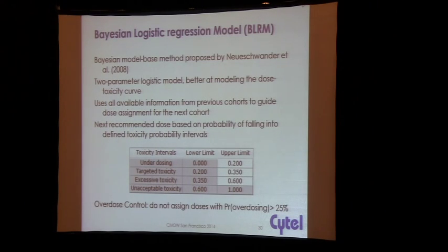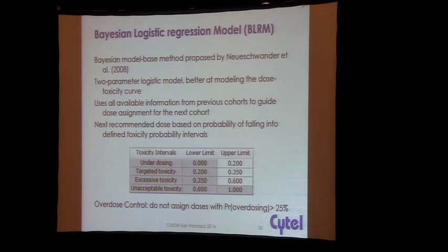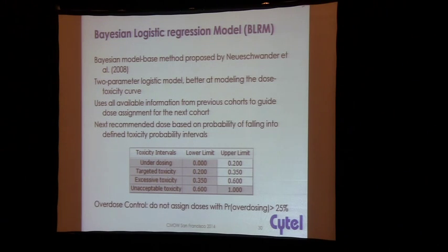The Bayesian logistic regression model is the model Novartis uses — they've run 150+ trials with this design in Phase 1 oncology. The people who published this are Novartis statisticians — Neuenschwander et al. The main difference is this is a two-parameter logistic model, so they can model the whole dose toxicity curve rather than just modeling the MTD.